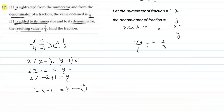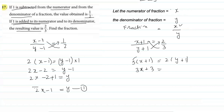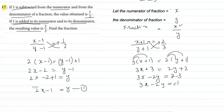Now for the second equation, cross multiplying (x+1)/(y+1) = 2/3: multiply 3 by (x+1) and 2 by (y+1). This gives 3x + 3 = 2y + 2. Rearranging: 3x − 2y = 2 − 3 = −1. So equation two is: 3x − 2y = −1.